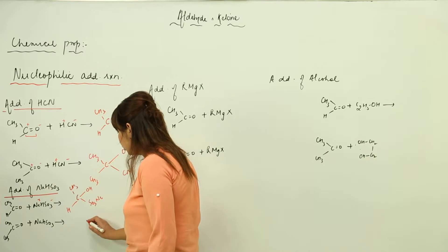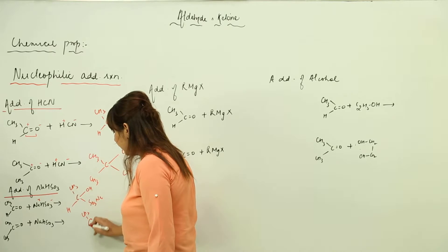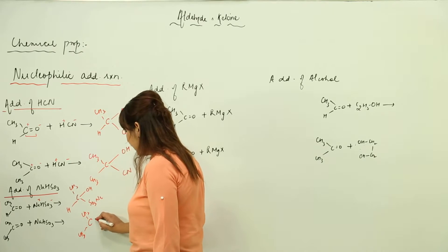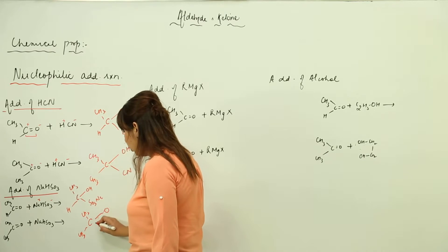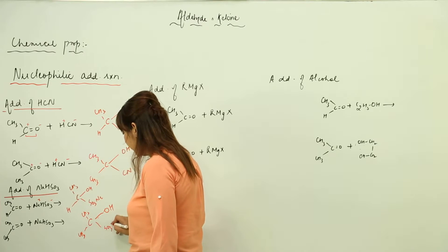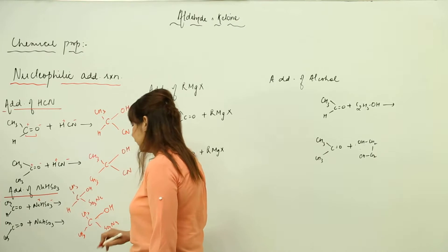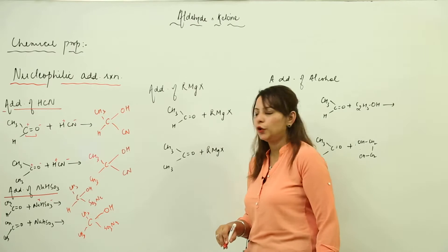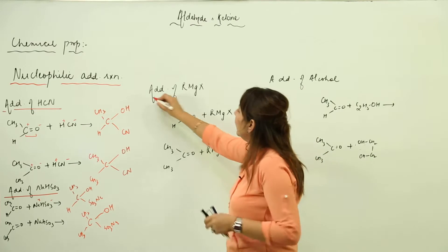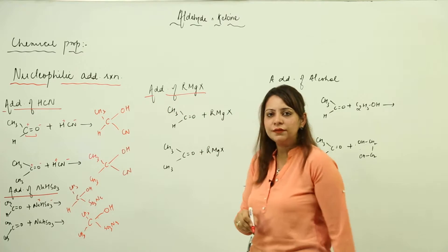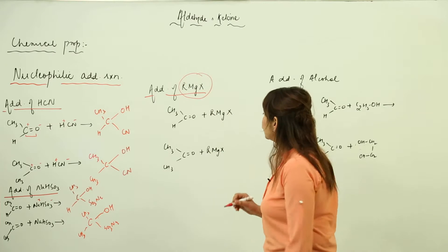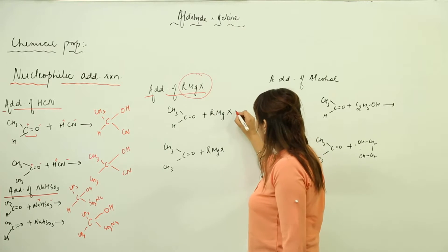Similarly, with ketone it also remains the same and it becomes OH and SO3Na — this kind of addition product is formed. Next, we are going to add Grignard reagent. We know that Grignard reagent is RMgX, so let's see how the addition is going to take place.